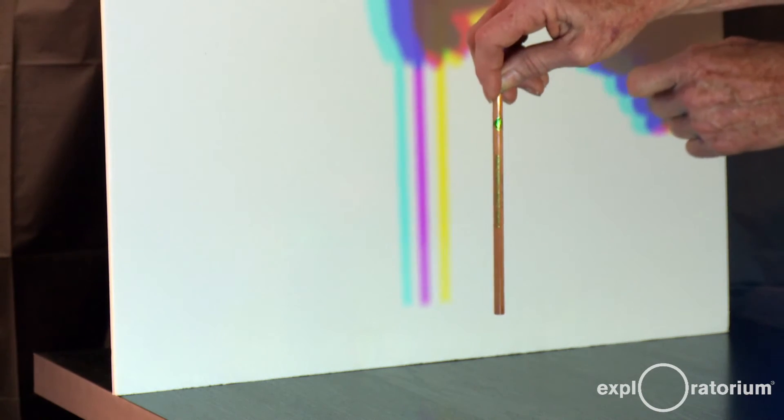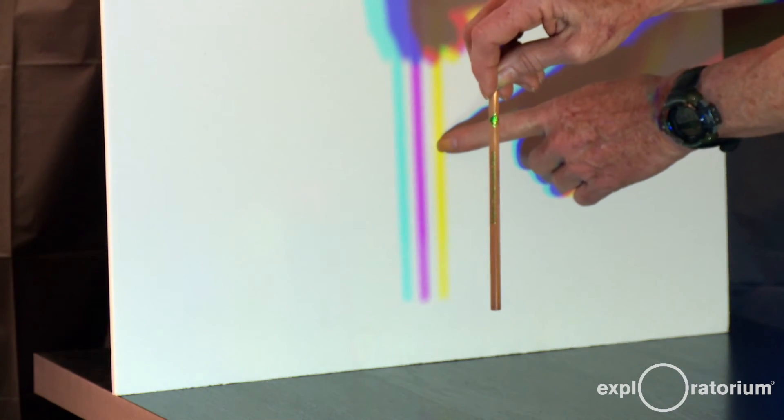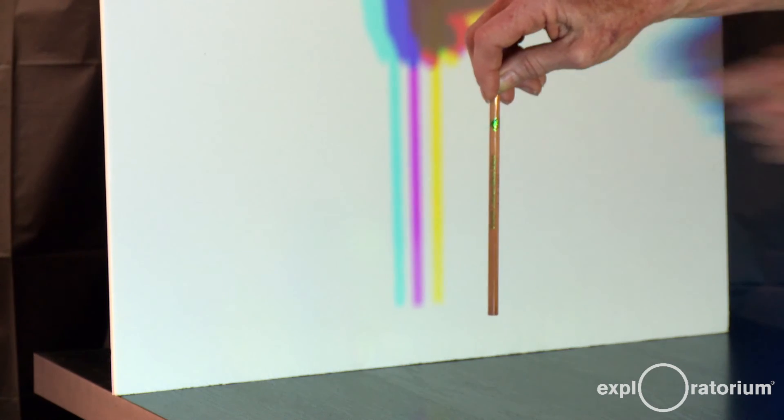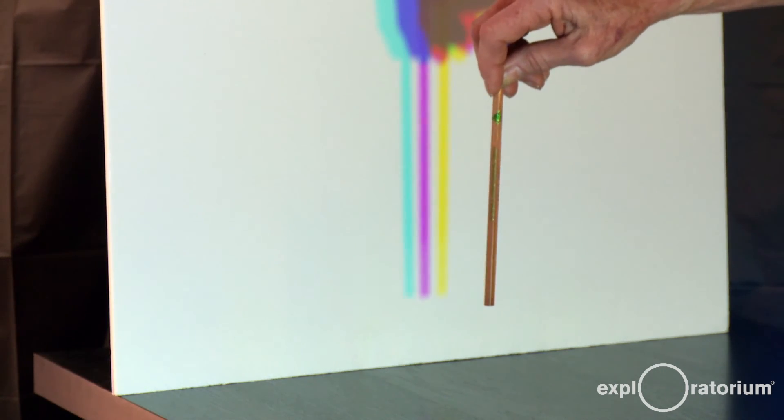Now that you understand the magenta central shadow, try to figure out how the yellow shadow is made and how the cyan shadow is made. We'll return with another video to give you the answer.